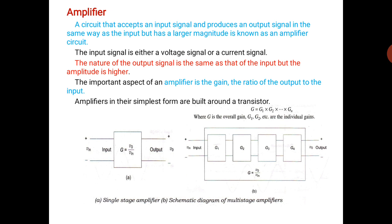In multistage amplifier, the input Vin is supplied to G1, the first amplifier. The signal of G1 is supplied to G2, G2 is supplied to G3, G3 is supplied to G4, and finally we get the V0 output signal.